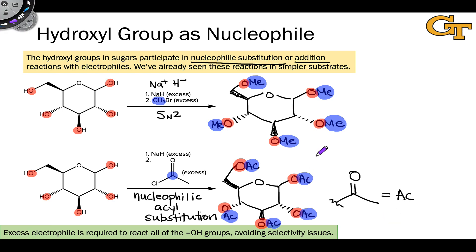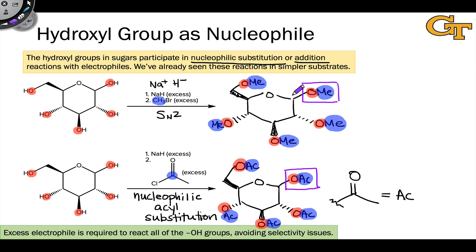One thing to note is that if we treat either of these substituted monosaccharides with hydrolysis conditions — solvent quantities of water and acid — we can selectively convert only the anomeric group back into a hydroxyl while leaving the other groups untouched. This happens because we can convert the anomeric group into a good leaving group, and it will depart to form a stabilized cation, which can then be attacked by water. None of the other oxygens can do this. This kind of exhaustive reaction of all the hydroxyls followed by hydrolysis of only the anomeric hydroxyl can be useful in the characterization of disaccharides.